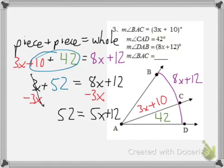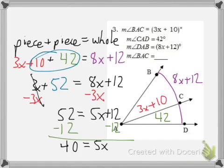In order to get the 5x by itself, I need to remove the 12. This will leave us with 40 = 5x. Dividing both sides by 5 will give us x = 8.